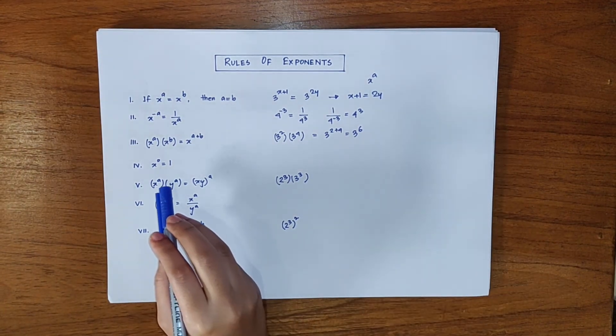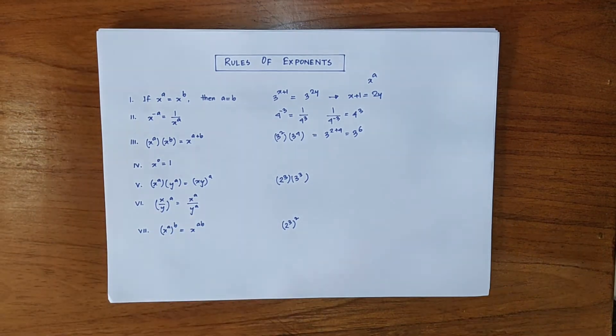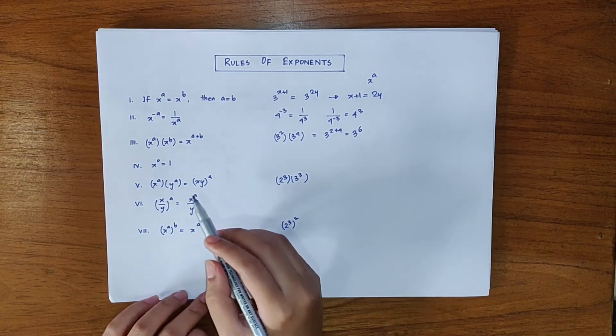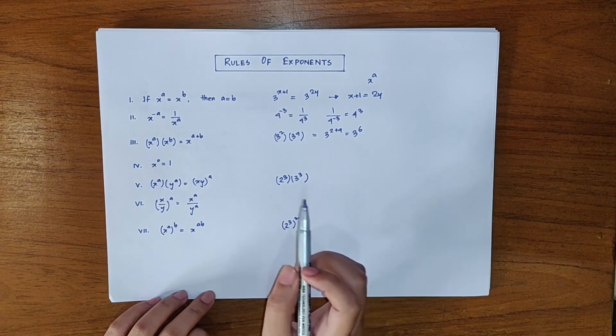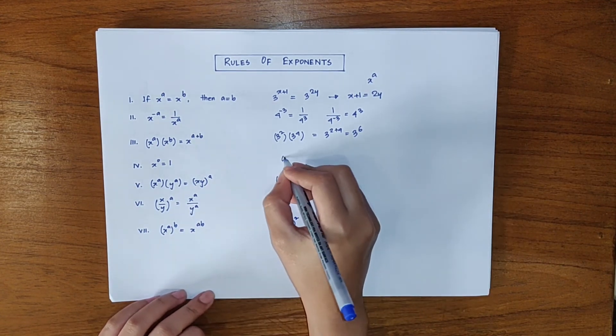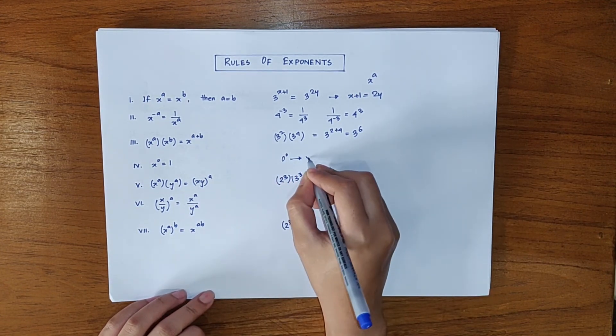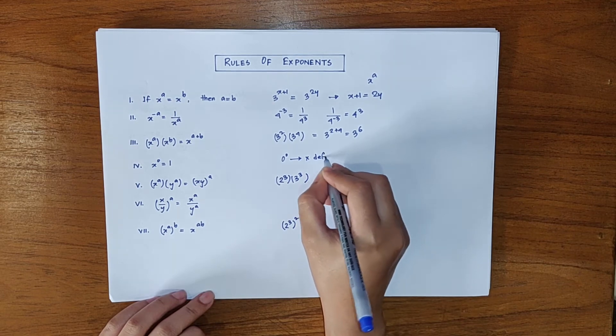Now x to the power 0 is equal to 1 which means that any number raised to the power of 0 equals 1 except for 0. 0 to the power 0 is not defined.